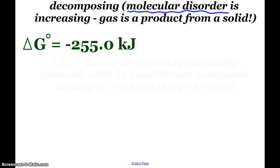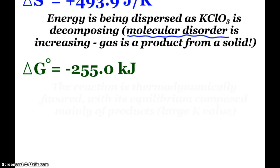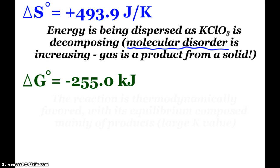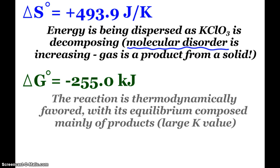Definitely a lot of increasing entropy. That's why we have a positive 493.9 joules per kelvin. And then the last value, ΔG, negative 255 kilojoules. Negative, so it is thermodynamically favored, a big number. 255, meaning that the equilibrium is composed mainly of products. We would expect a large equilibrium constant value.